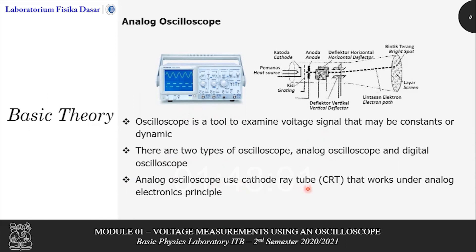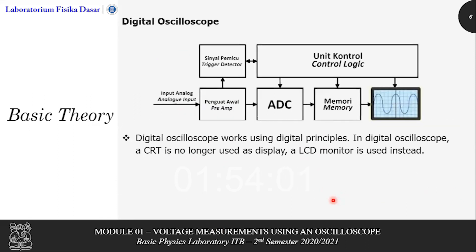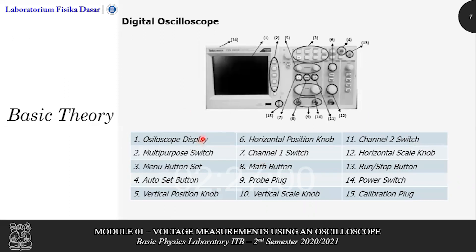Analog oscilloscope uses cathode ray tube or CRT that works under analog electronic principle. And the second type, the digital oscilloscope, works under digital principle. In digital oscilloscope, the CRT is no longer a display. An LCD monitor is used instead. So digital oscilloscope is the type of oscilloscope that we use in LFT. These are buttons on the digital oscilloscope.